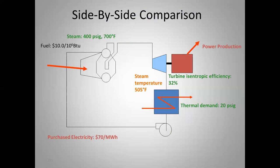Through the steam turbine: we get power output, and the steam temperature drops to 505°F because energy is extracted and converted to electricity. With the same thermal demand of 35.5 million BTUs per hour but less energy in the steam, we need to generate a little more steam to supply the same heat to the process.